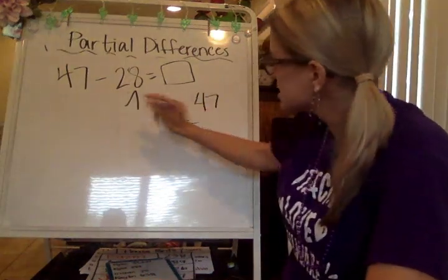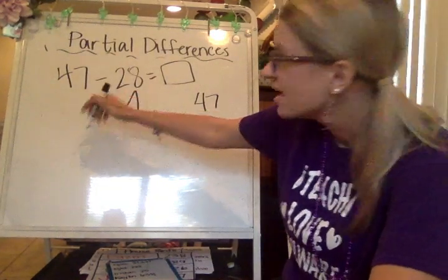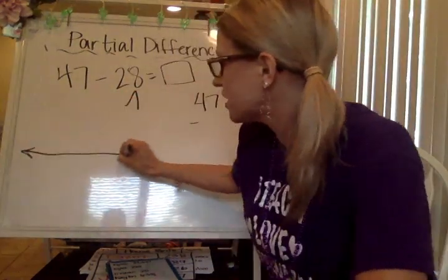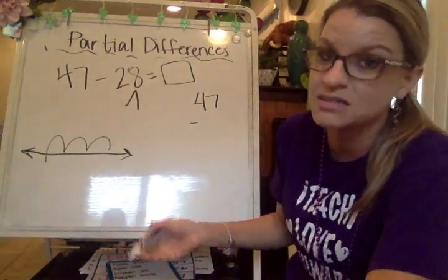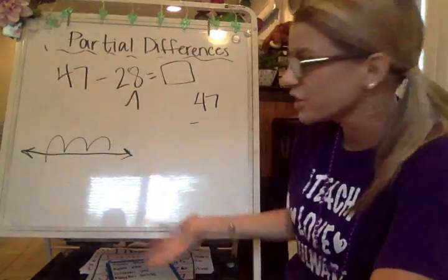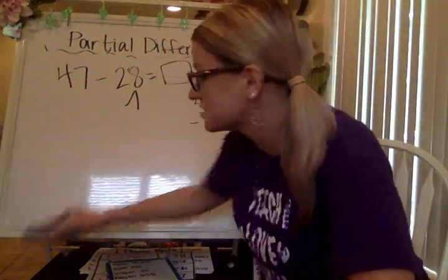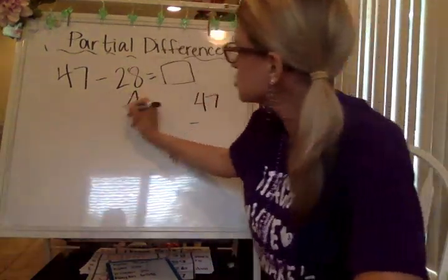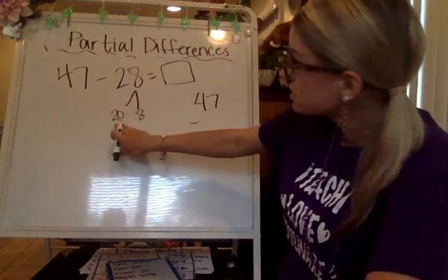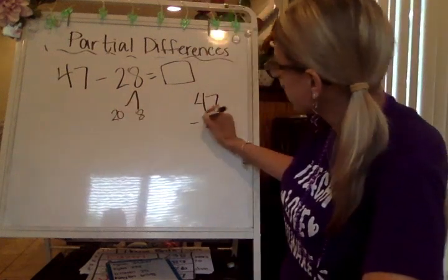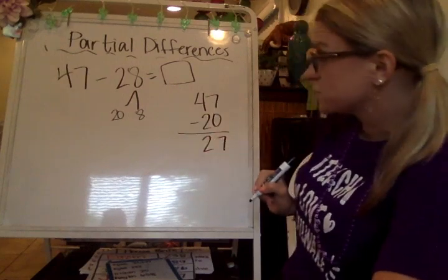My first step is going to be starting with 47. I want to subtract the tens first — this is the same as when you're on your open number line and you're doing your jumps. You want to subtract the tens first. This is just another way of showing that with partial differences. So 47 minus 28: we've got 20, then we've got 8. I'm going to start with subtracting the 20, which gives me 27.